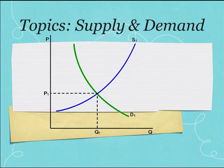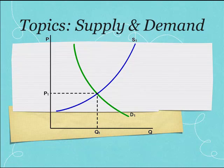Quantity supplied is one point on the line. It is how many items are supplied at a specific price, so it is controlled by the price of an item. Supply, on the other hand, is the entire line — it is how much of a product is supplied at every price, so it is not controlled by the price of the item itself.